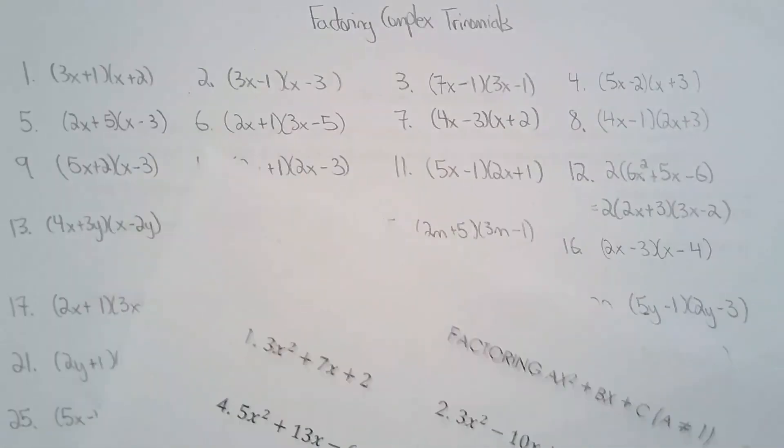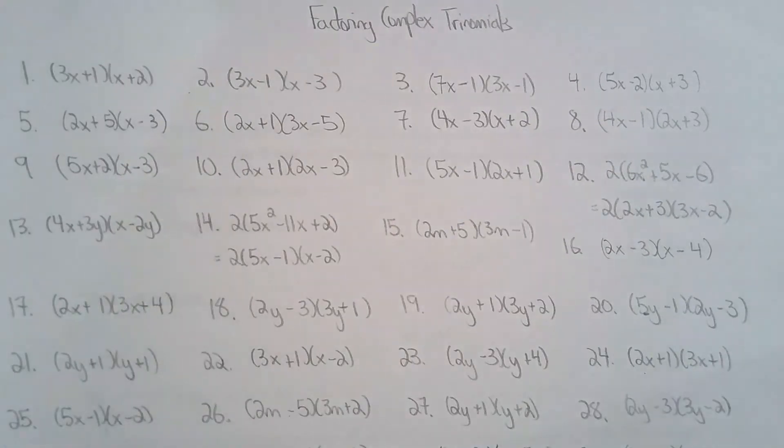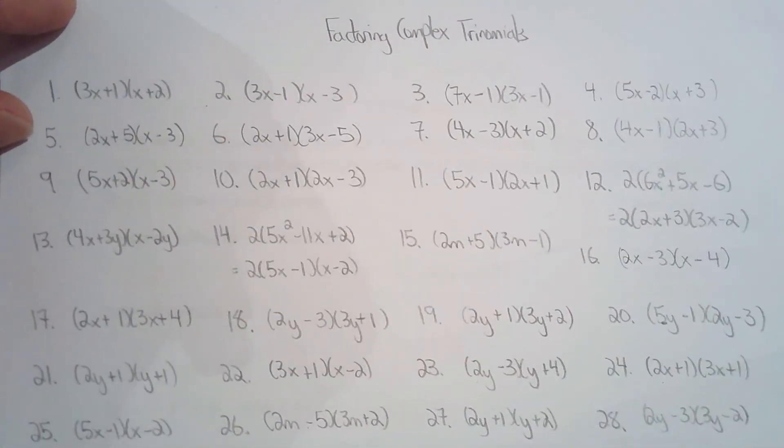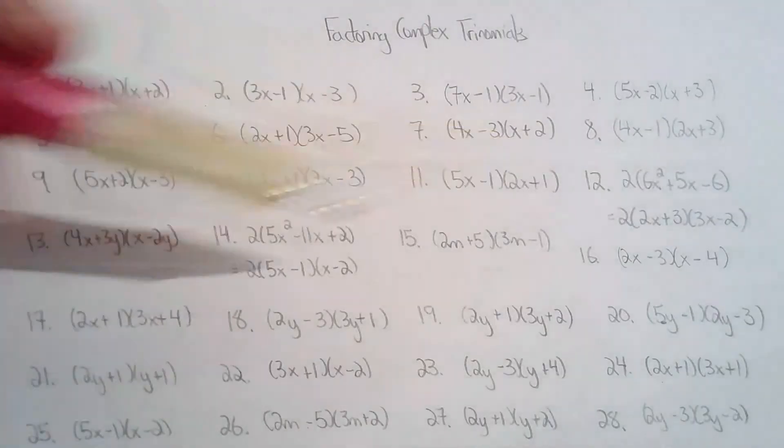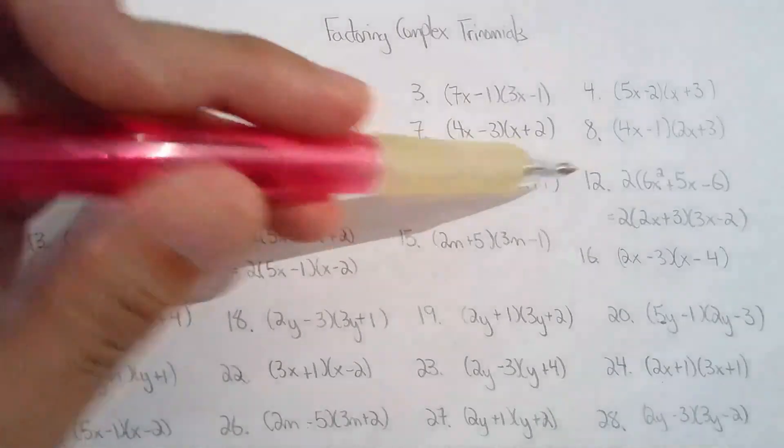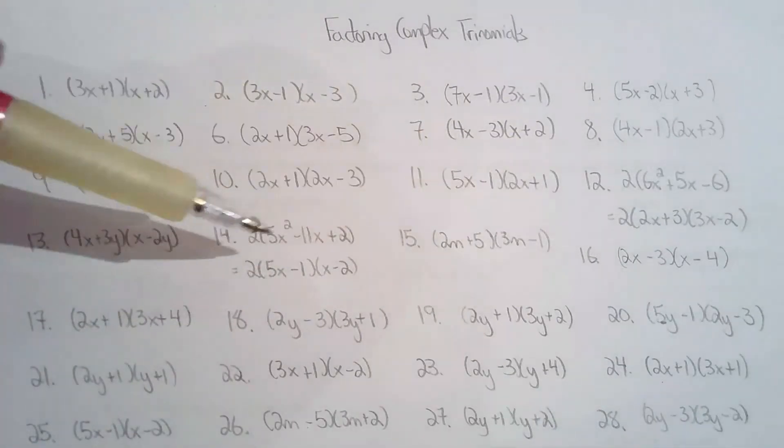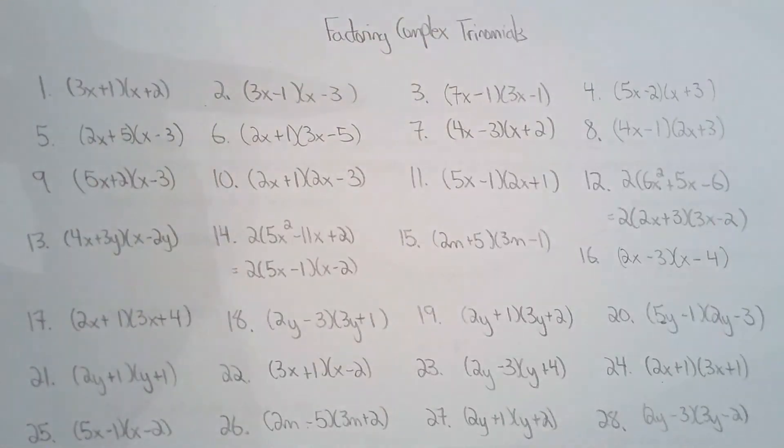Alright, so without further ado, let's just look at the trinomials here. There's really not much to say. Question 12 and 14, there's an additional step. I saw a common factor first. In both cases, there's a common factor of 2. So I common factor the 2 and then I factor the complex trinomial.